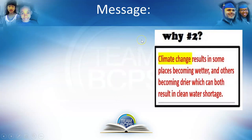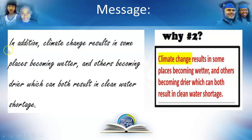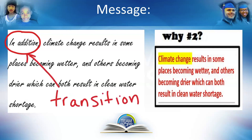Then I'm going to look at reason number two. We said climate change results in some places becoming wetter and others becoming drier, which can both result in clean water shortage. Now, have a look at the beginning of this sentence — what are the two words? 'In addition.' This is what is known as a transition phrase. It connects the former sentence with this sentence.